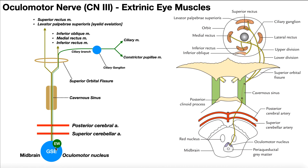We have two regions here: the EW — the Edinger-Westphal nucleus — that's for the parasympathetic part, shown in green. In gold, originating from the blue nucleus, is the GSE — general somatic efferent — controlling the extrinsic eye muscles. So we're going to follow the axons of this oculomotor nerve.